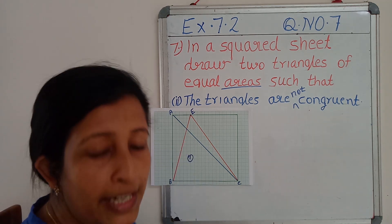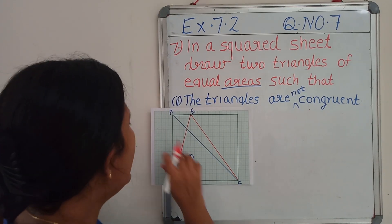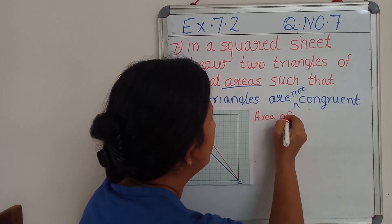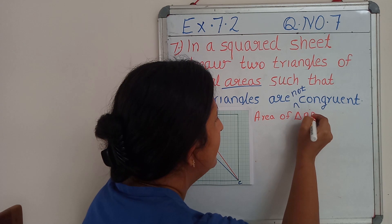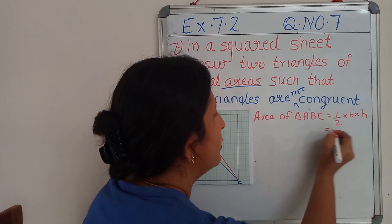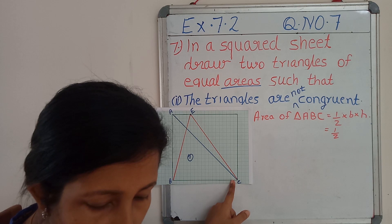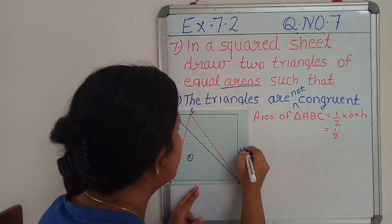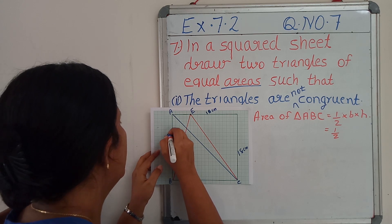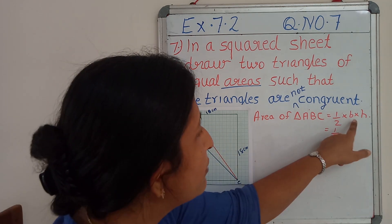Now we are going to find out the areas of both these triangles. What is the formula? Area of triangle ABC equals half the base into height. What is the base here? Base is BC. All the sides are 18 cm as in the previous problem. So half the base — base is BC, again 18 cm — into height.